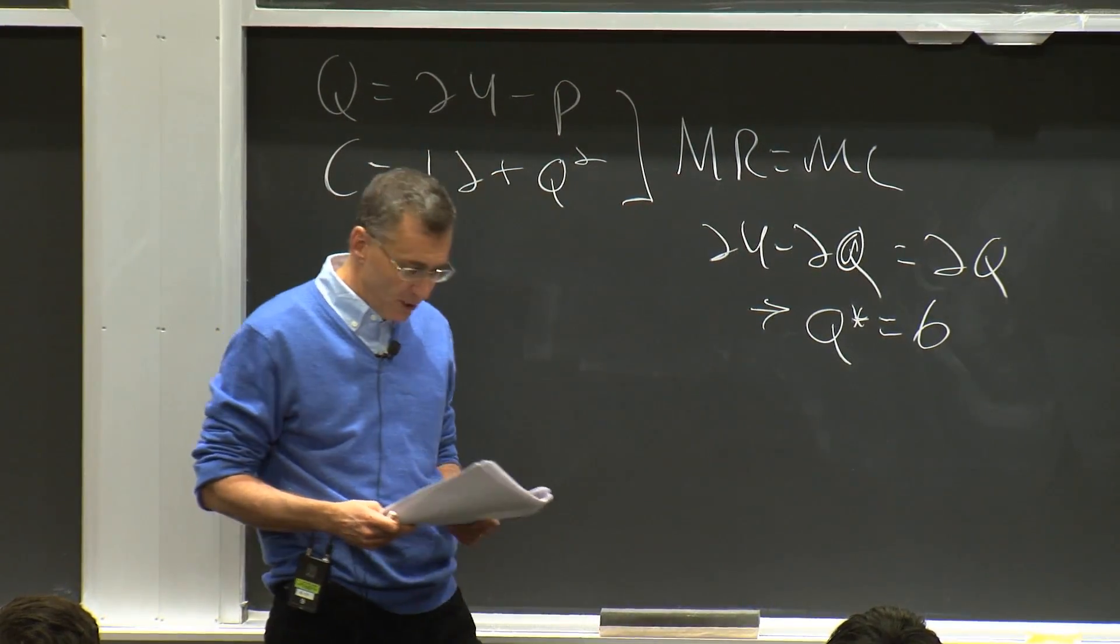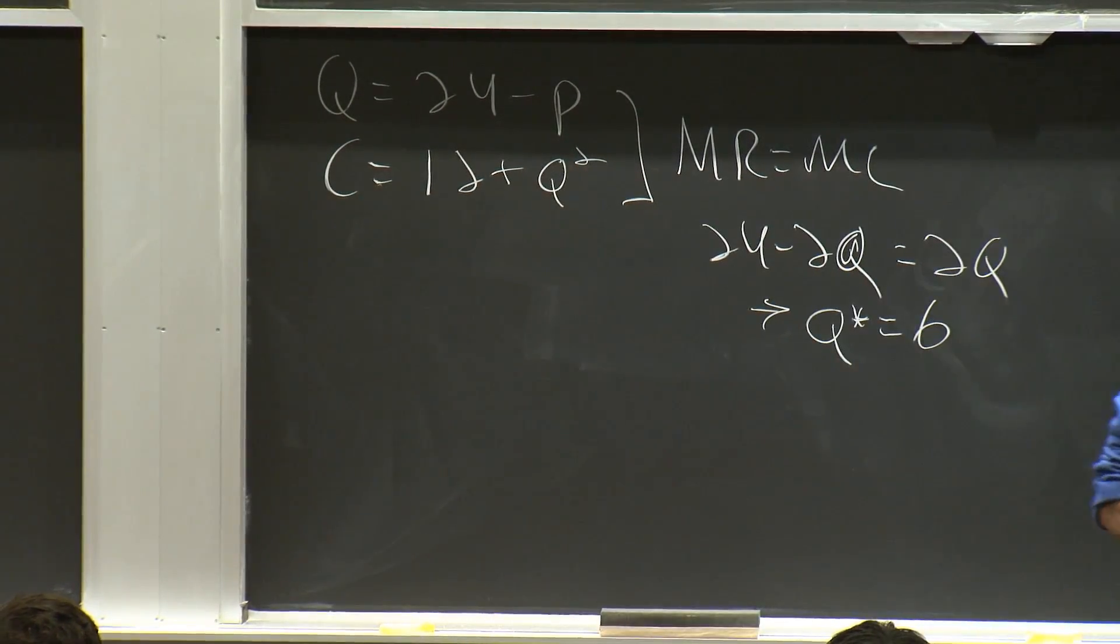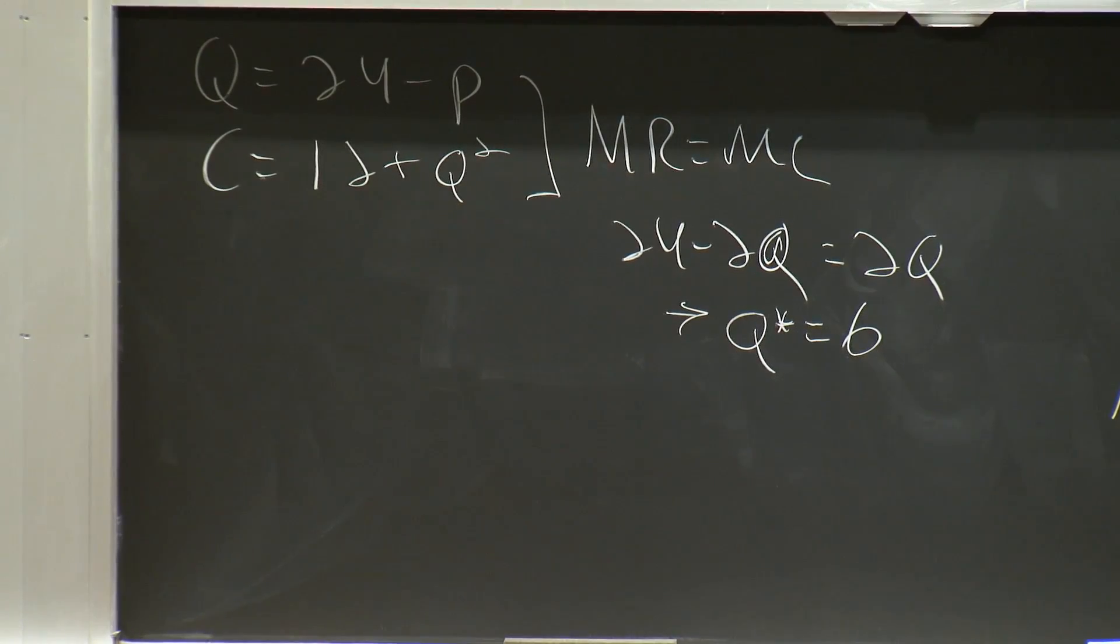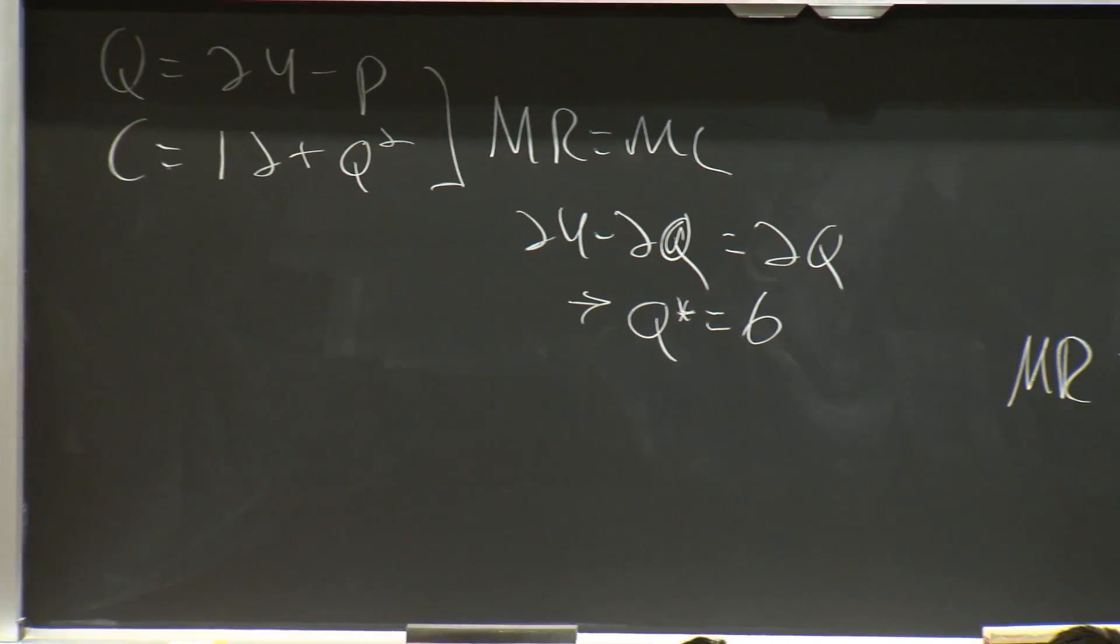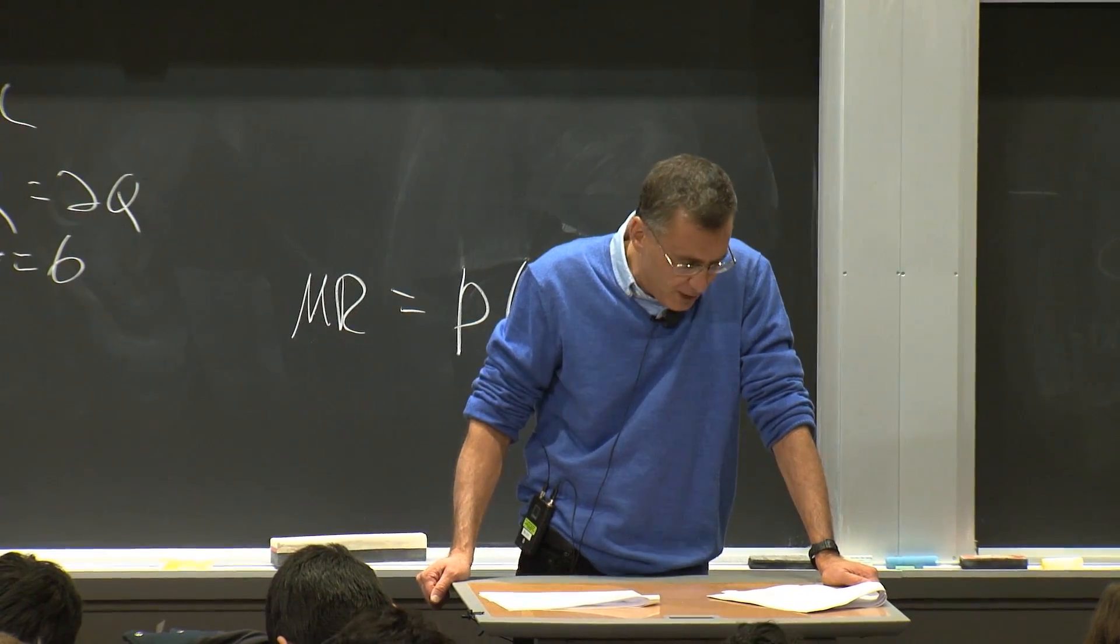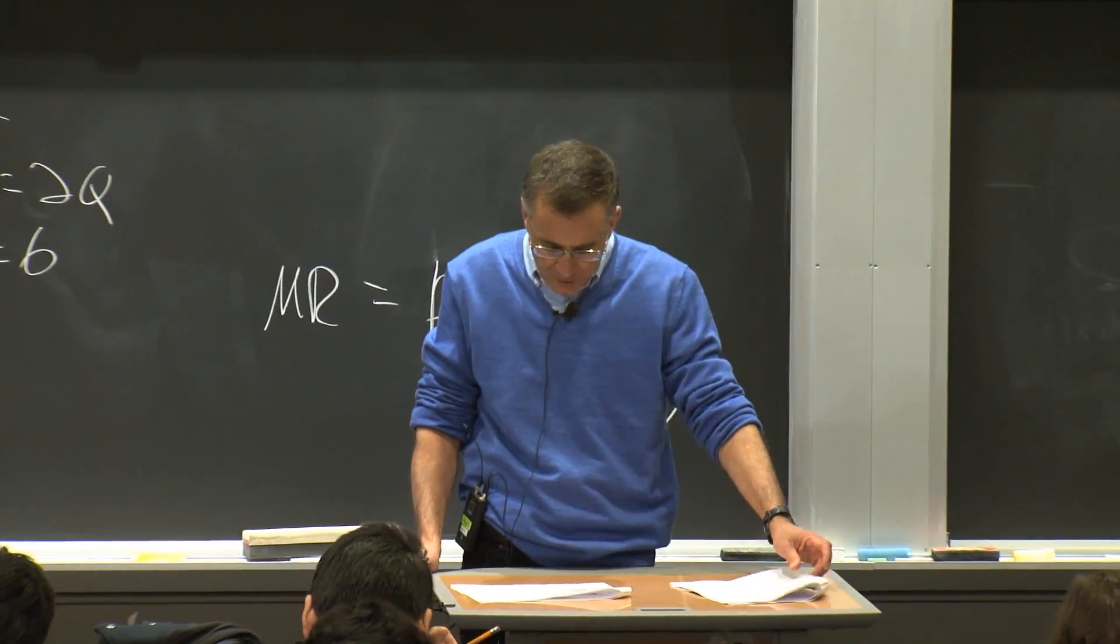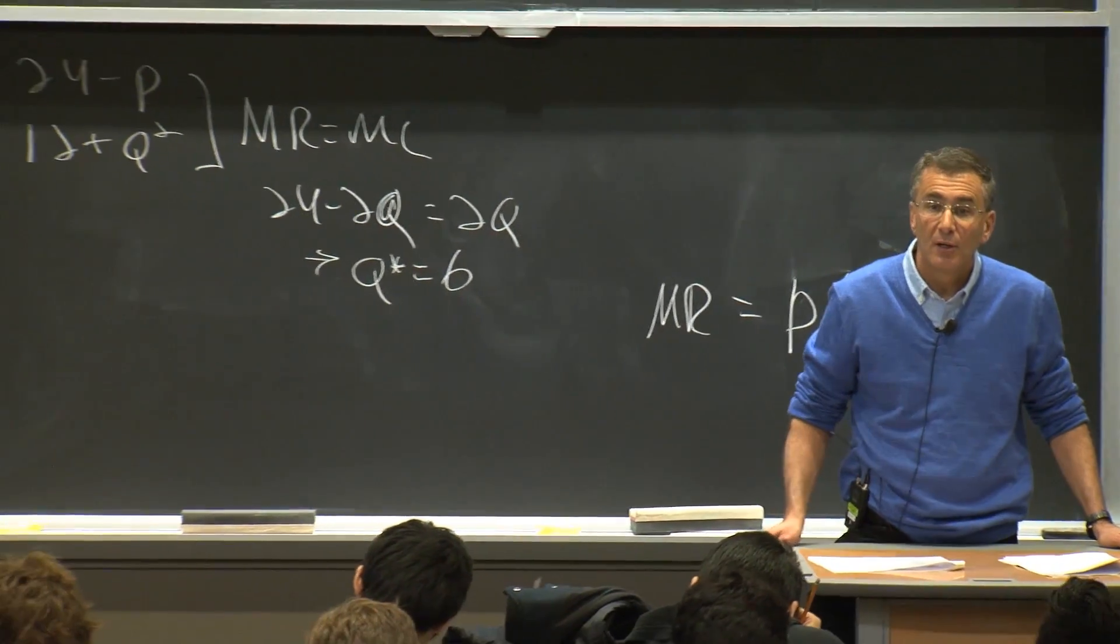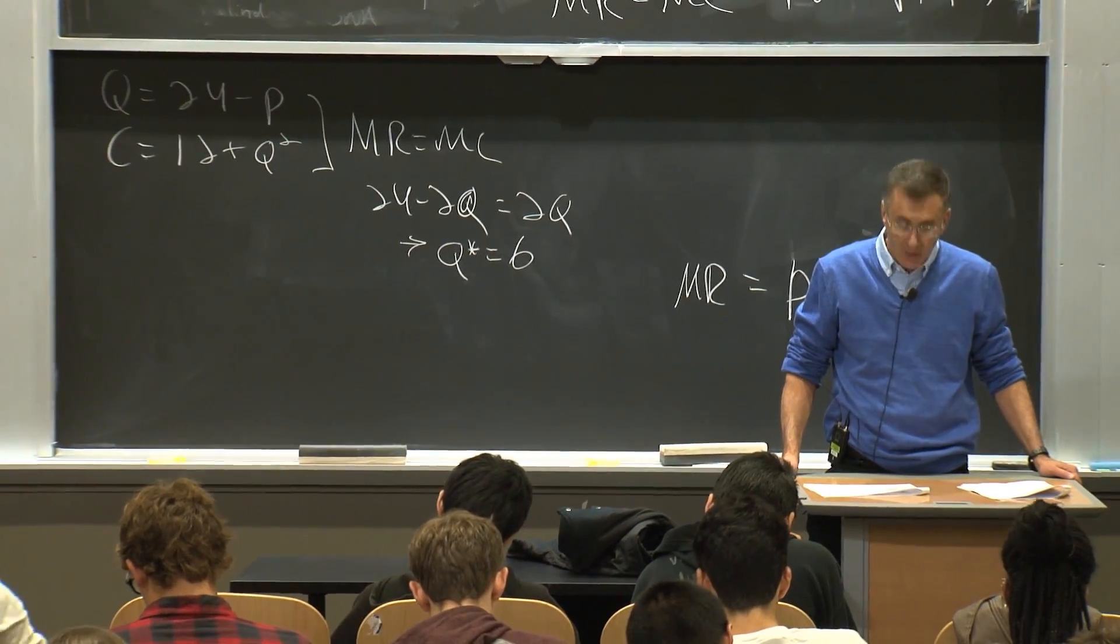And we can see q star equals 6, because we can see, now go to your diagram, that's where marginal revenue equals marginal cost. Marginal revenue equals marginal cost at 6 units. We just solved for it mathematically there. You can see it from your graph here. Questions about that?